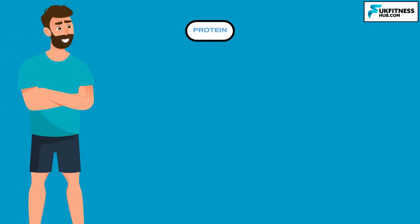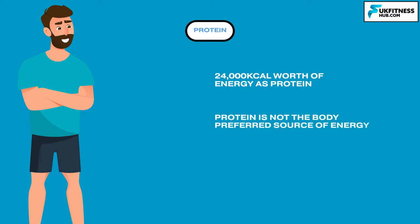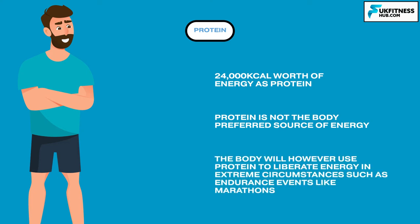Protein can also provide energy to cells. An average 70 kilo male can store around 24,000 calories of energy as protein. Due to protein being primarily stored within the structures of the body, it is not the body's preferred source of energy. The body will however use protein to liberate energy in extreme circumstances such as endurance events like marathons.